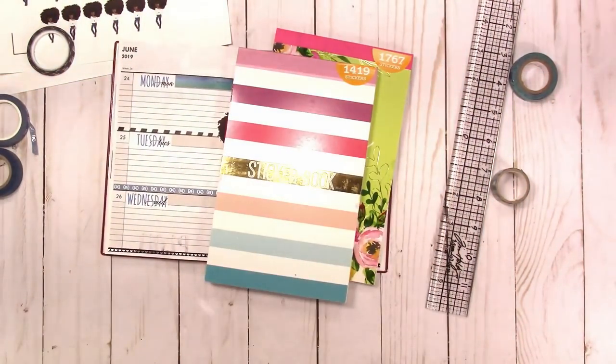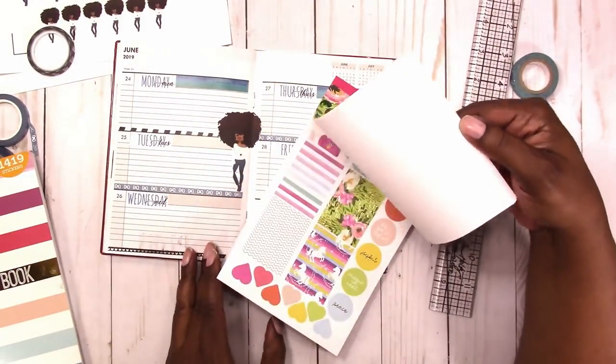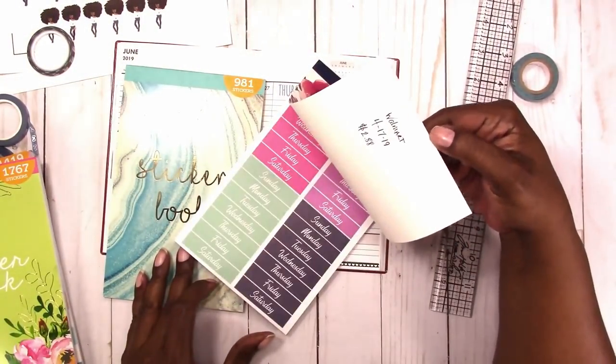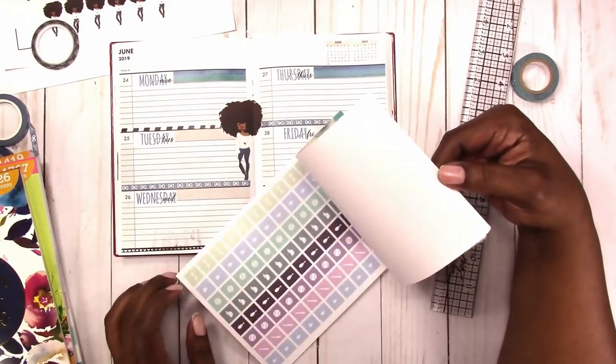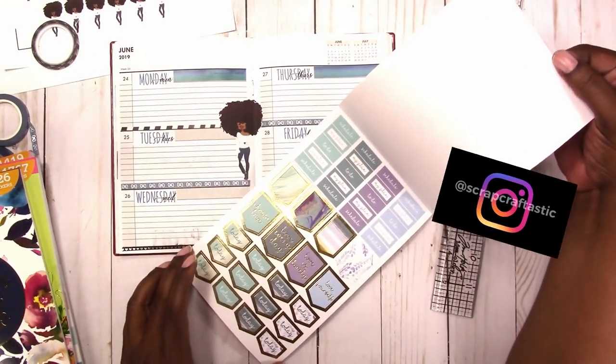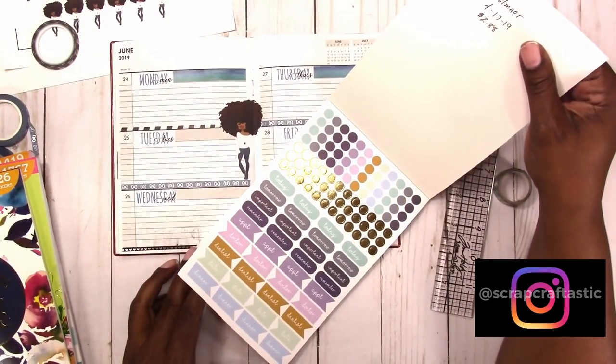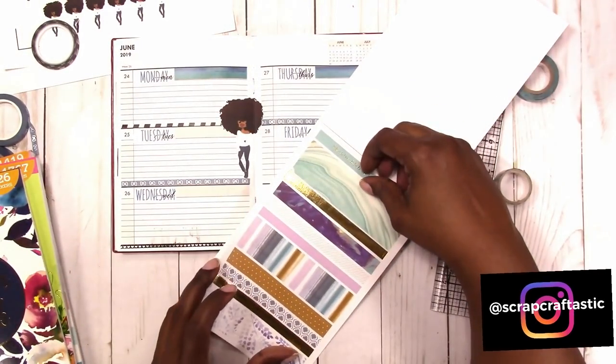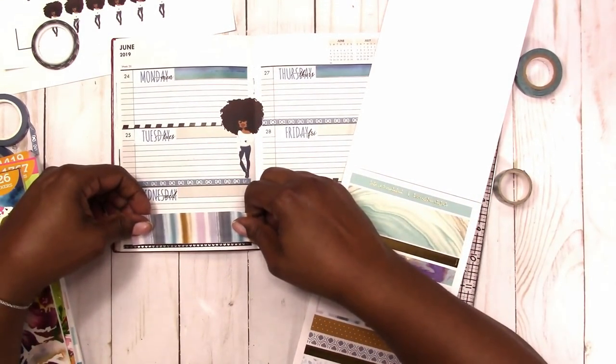So these are the sticker books from Walmart and I'm just flipping through trying to find the book with the blue stickers. I wasn't sure which one it was but it is this one here. So I'm looking through to find stickers that will coordinate with the color scheme that I chose for this spread. And I'm going to use this wide strip with the stripes on it to cover where I had the bleed through on Wednesday.